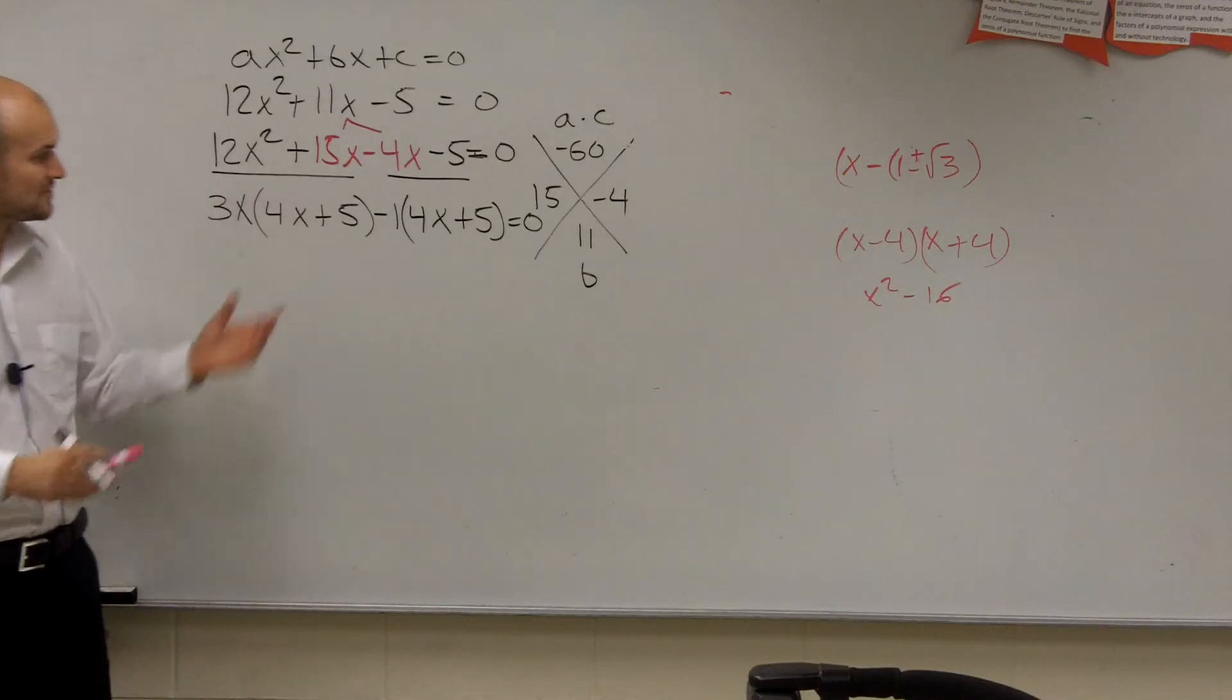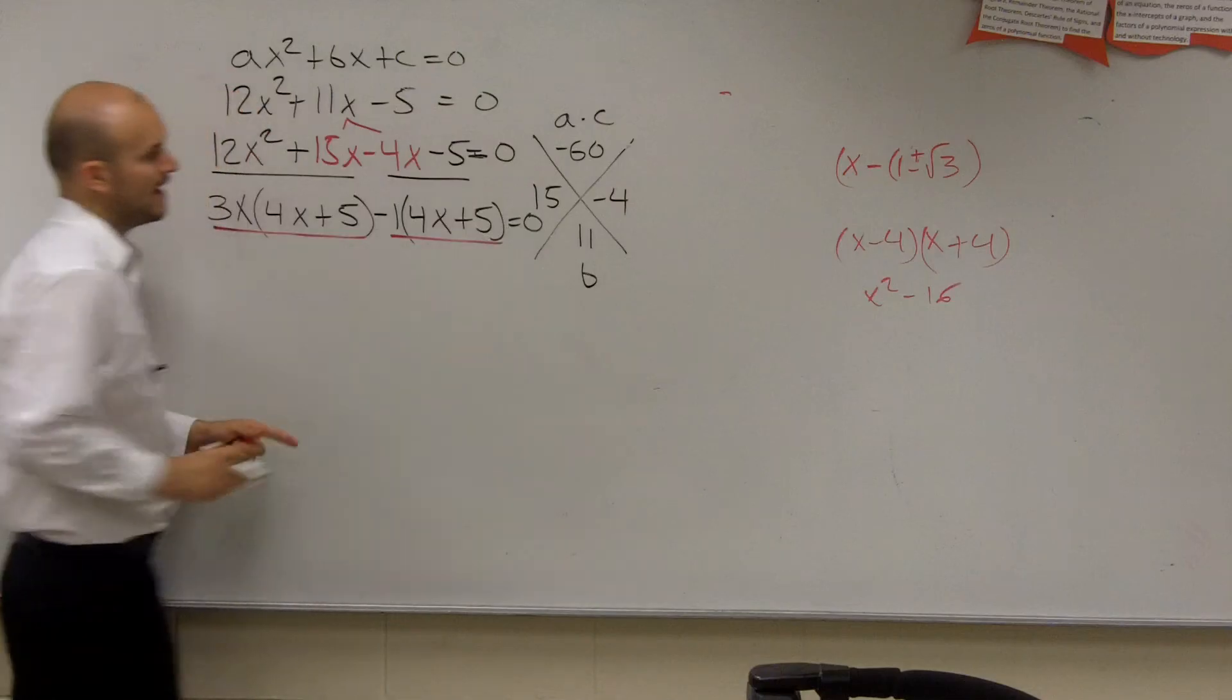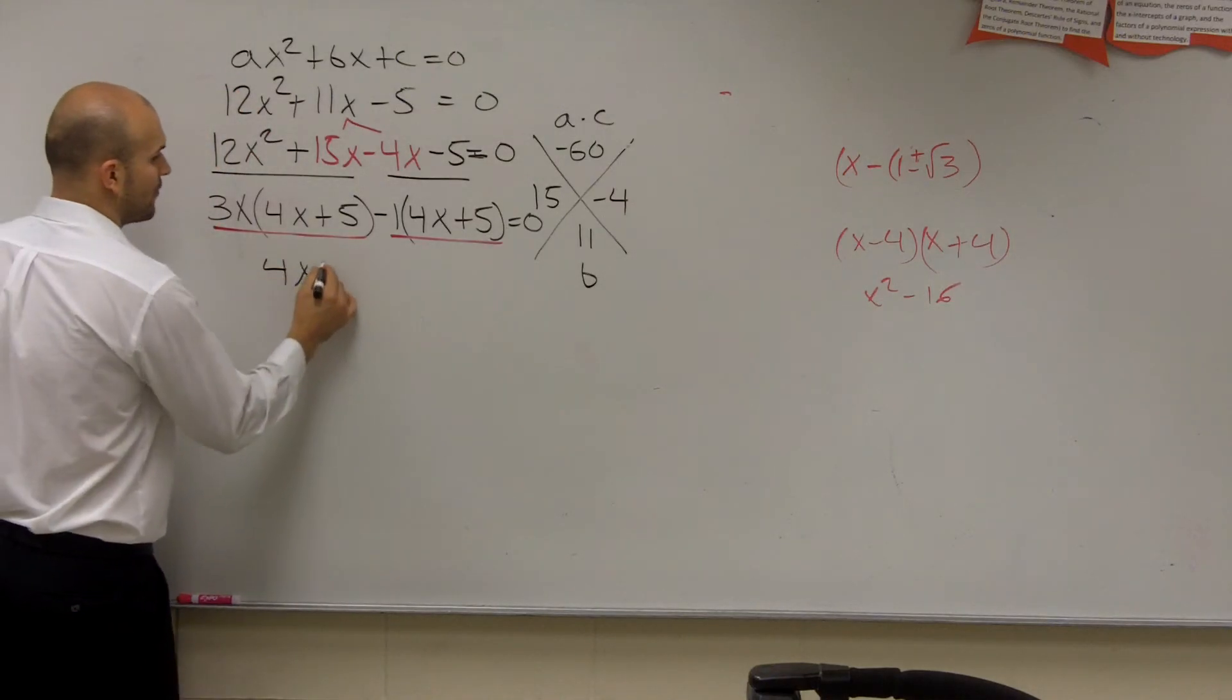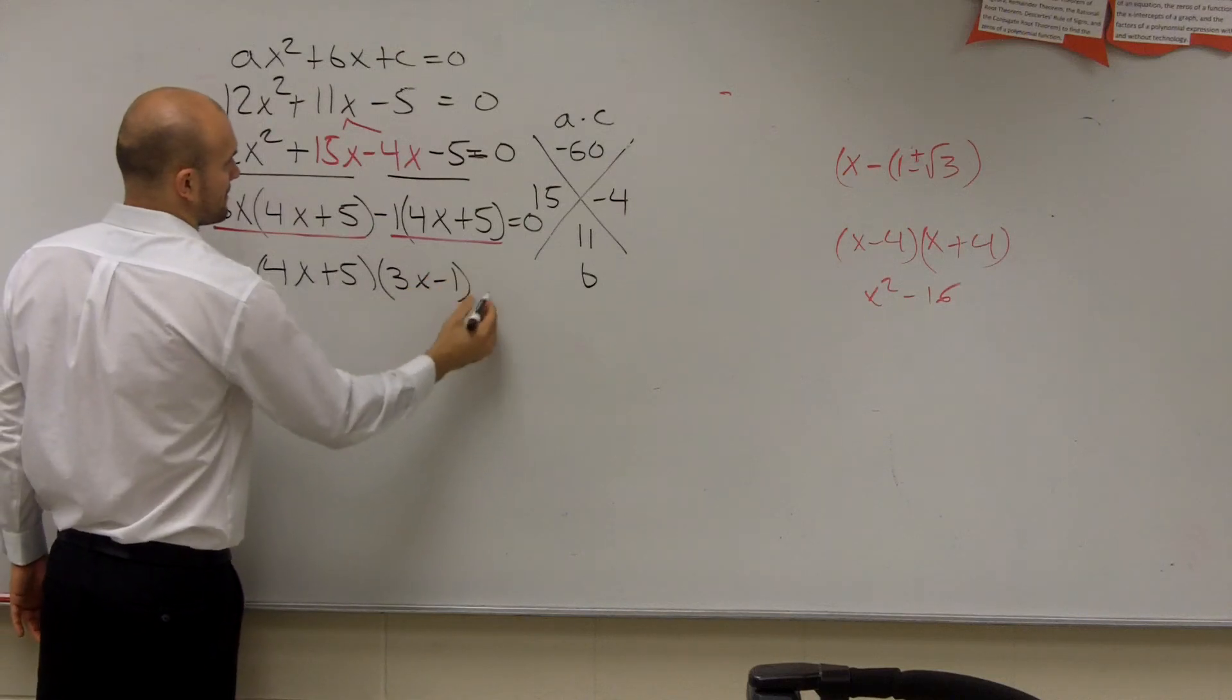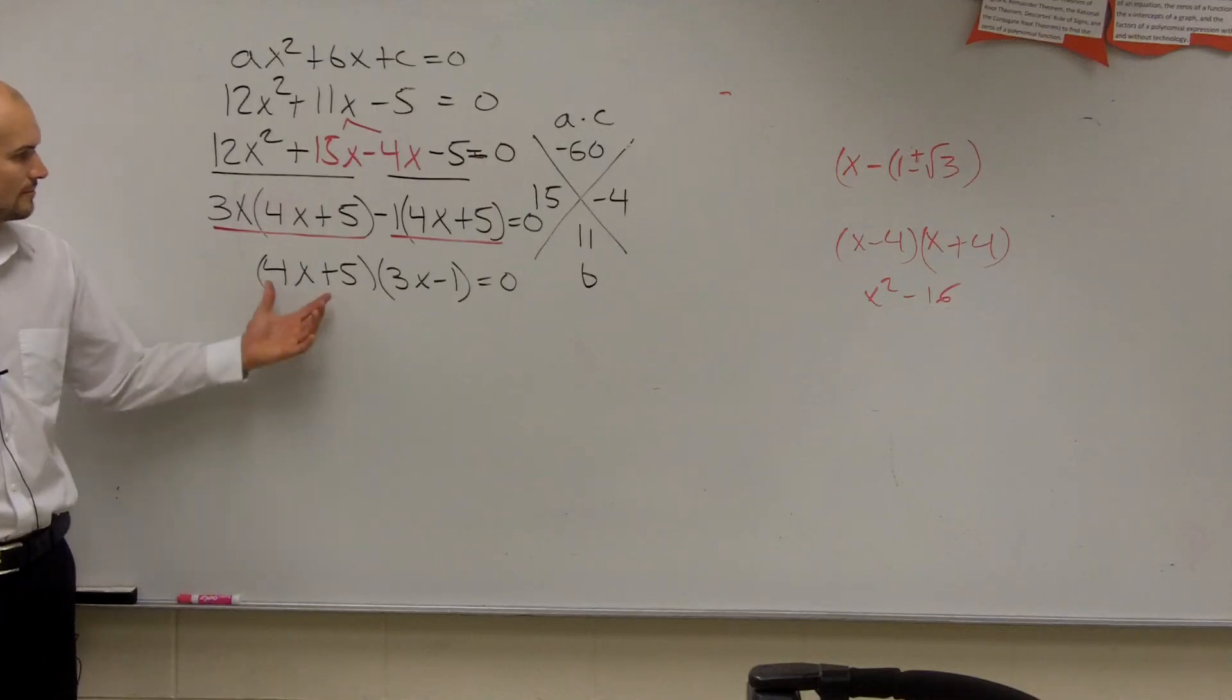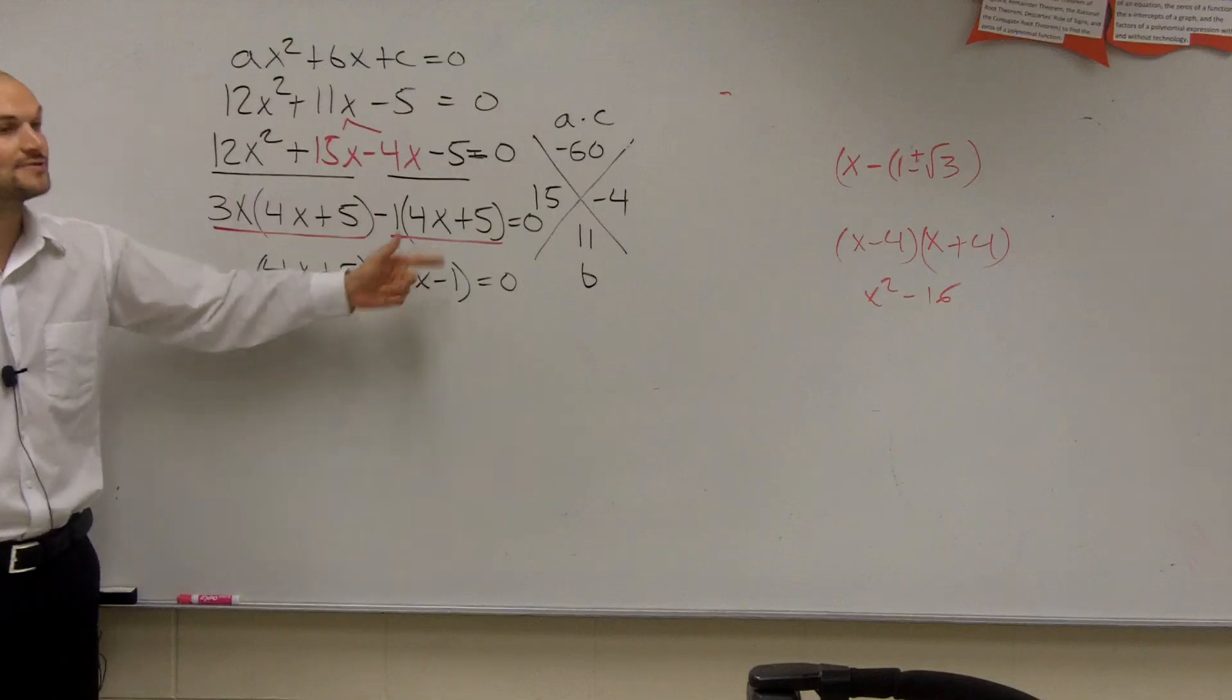Then what we look at is we say, can we factor something in general from this whole equation? And yes, both of these terms both share now the expression 4x plus 5. So I factor that out. Then I have 4x plus 5 times 3x minus 1 equals 0. You're just factoring. It's like over here. They both share an x, so you just factor it out. Now we can apply the zero product property.